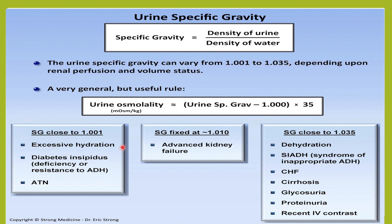When specific gravity is increased, the density of urine is increased. Kab density of urine increase hogi? Jab solute concentration zyada ho jayega. Solute concentration kab zyada ho sakta hai? In case of diabetes, whenever there is glycosuria, whenever there is proteinuria — you will have an increased solute concentration. Or when the water level in the body is less, for example in patients of dehydration, relatively solute ka level zyada ho jayega. In case of syndrome of inappropriate ADH secretion also, you will have increased specific gravity.